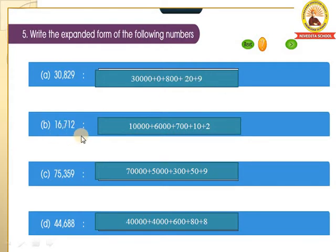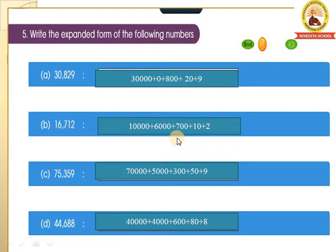Next, B: 16,712. You have to write: 1 is in which place children? 1 is in the 10,000th place, so write down 1 into 10,000 is 10,000. Plus 6 is in which place? 6 is in the 1000th place, so 6 into 1000 is 6,000. Plus 7 is in the 100th place, so plus 700. Plus 1 is in which place? 1 is in the 10th place, so write down plus 10. Plus 2 is in the 1st place, so write down 2. Have you got how to write the expanded form?